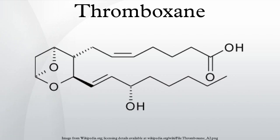Thromboxane is a member of the family of lipids known as eicosanoids. The two major thromboxanes are thromboxane A2 and thromboxane B2. The distinguishing feature of thromboxanes is a six-membered ether-containing ring. Thromboxane is named for its role in clot formation.